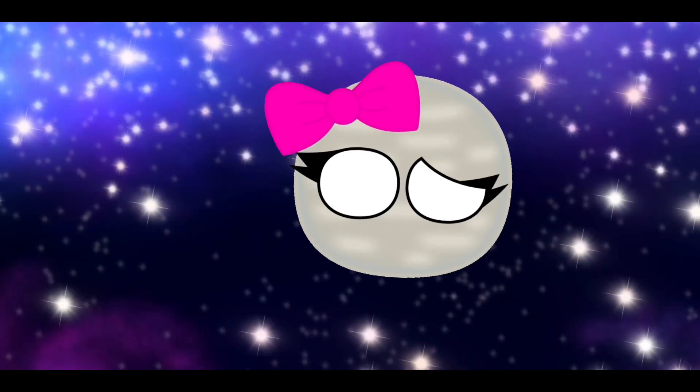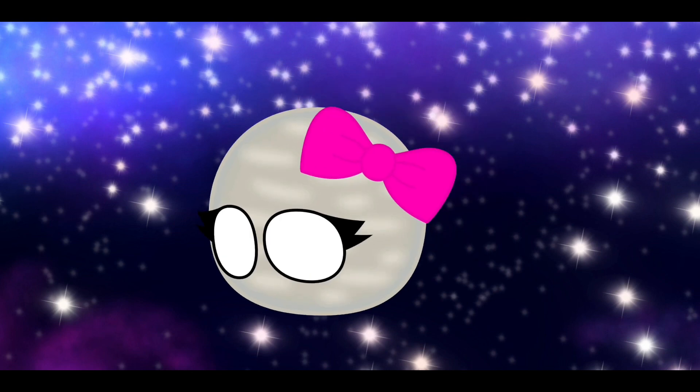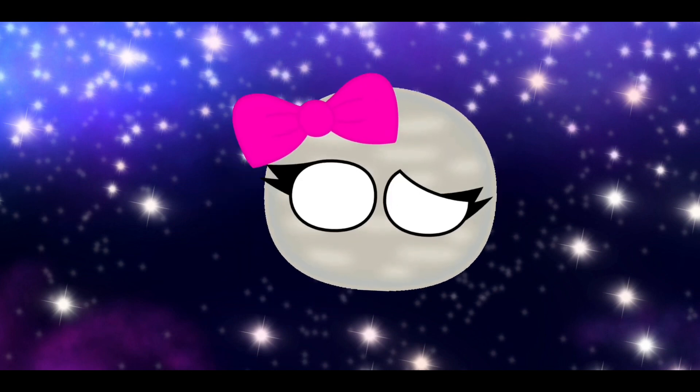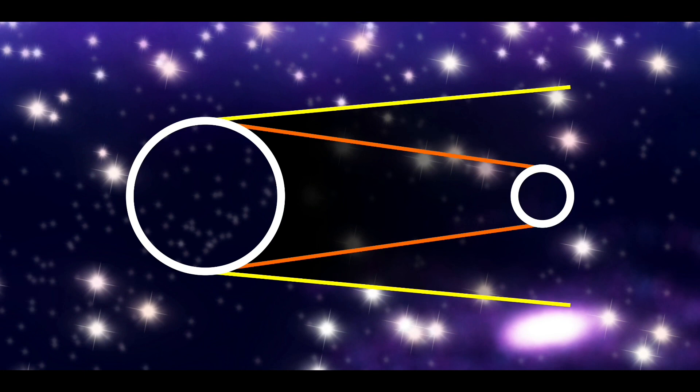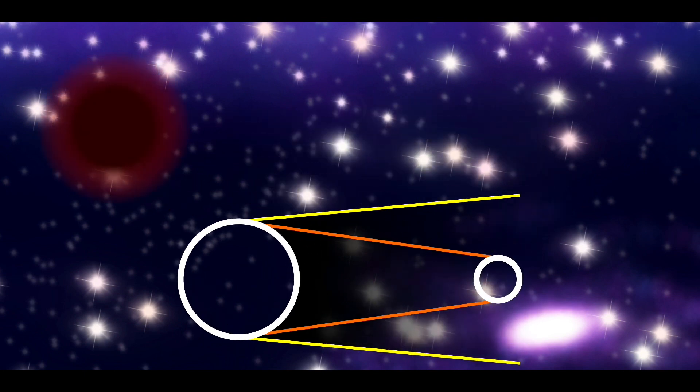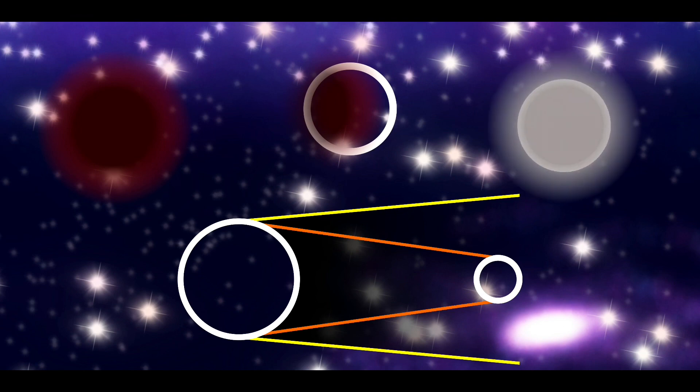So, what about a lunar eclipse? Would Earth cast a shadow on the Moon's surface? Correct. Umbra and Penumbra will also apply to this as well. Total lunar eclipse, partial lunar eclipse, and penumbral lunar eclipse.